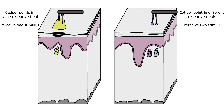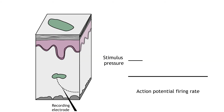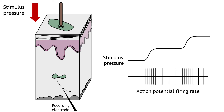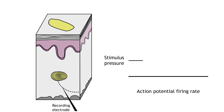Another important characteristic of somatosensory receptors is adaptation rate. Fibers that are slowly adapting show action potential firing throughout the entire time a stimulus is present. Merkel cells and Ruffini endings are both slowly adapting fibers. As the stimulus moves from not present to weak to strong, the action potential firing of the Ruffini ending fires throughout the entire stimulus. Slowly adapting fibers are most useful for determining the pressure and shape of the stimulus.